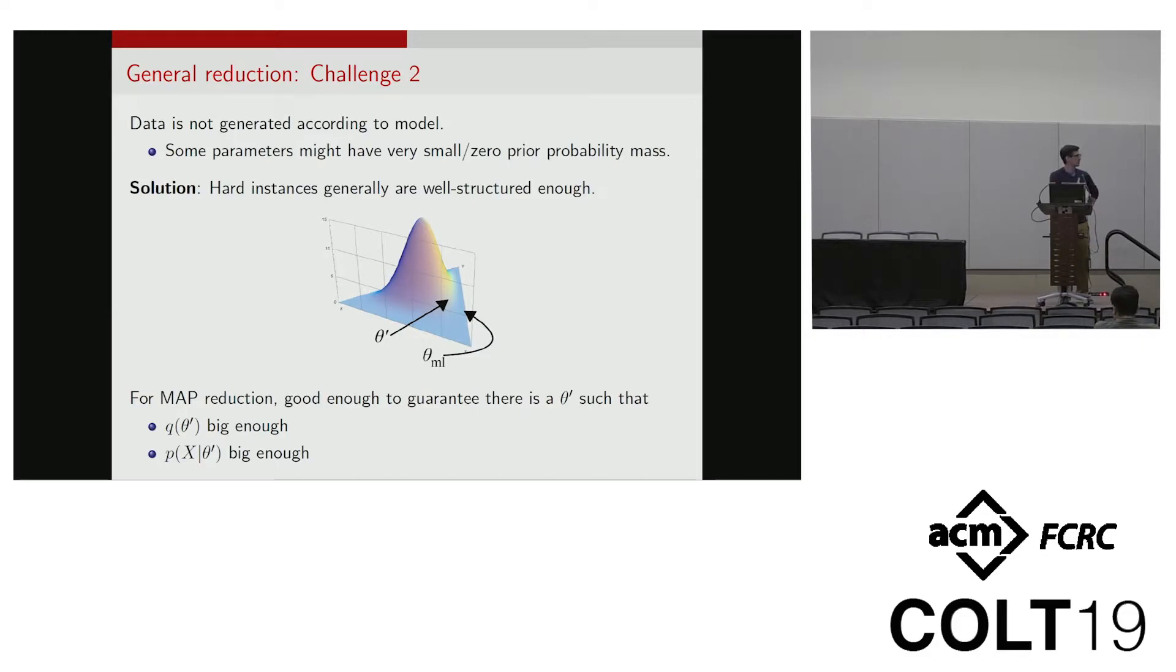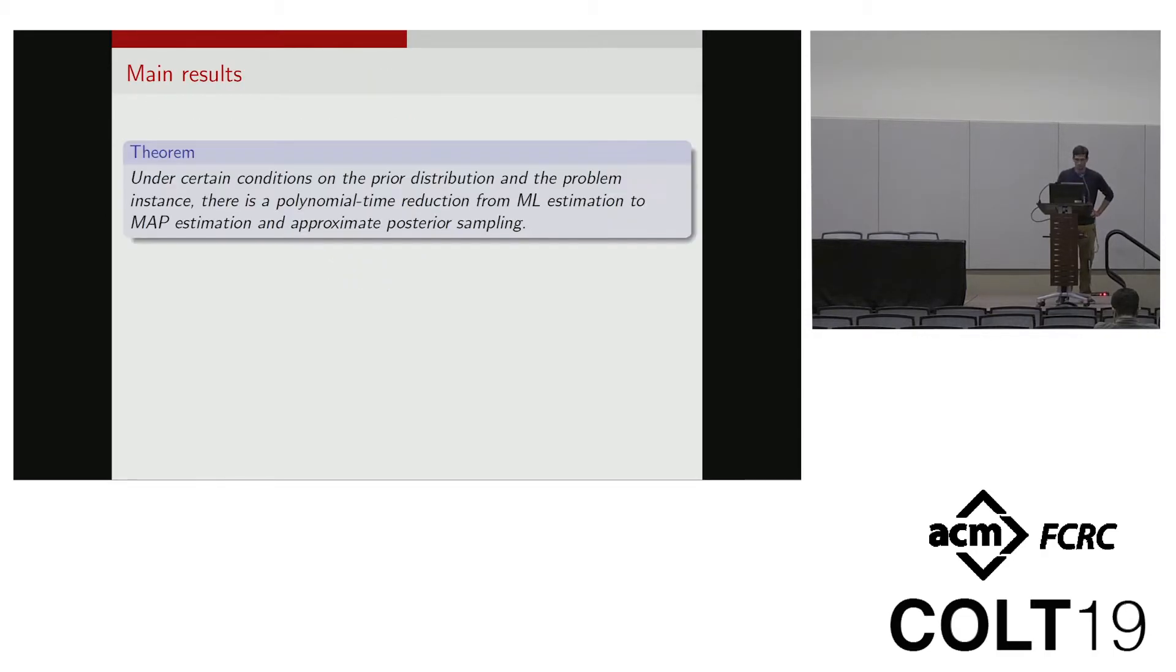For example, for the MAP reduction, it's simply good enough to guarantee that there's some theta prime that has large enough prior density and that it also has large enough likelihood. While you wouldn't be able to guarantee this in general, for the types of hardness results out there, you can actually pull out these types of structures. In this work we pull out these types of generic conditions and formalize them, and we show that when these hold, there are polynomial-time reductions from ML estimation to these Bayesian problems.